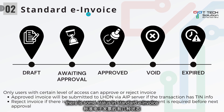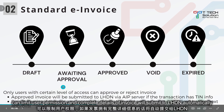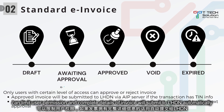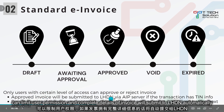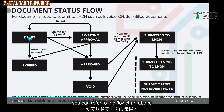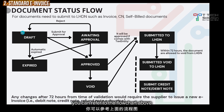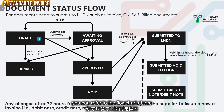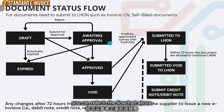Second, for the standard invoice, it is divided into a few different statuses. In AutoCount, you can set different user permissions, and an approved invoice will be submitted to LHDN via the AIP server. If the transaction has TIN info, here is the flowchart: once you create an invoice it becomes a draft, then you submit for approval. Once the details are complete, it will be approved and directly submitted to LHDN.